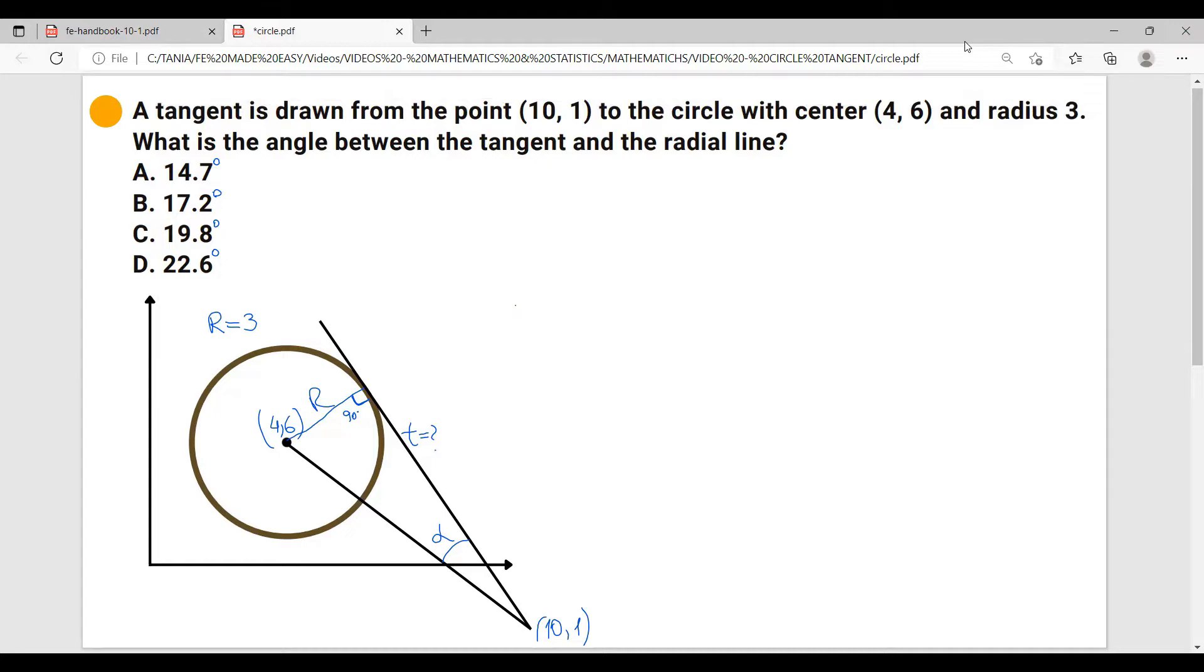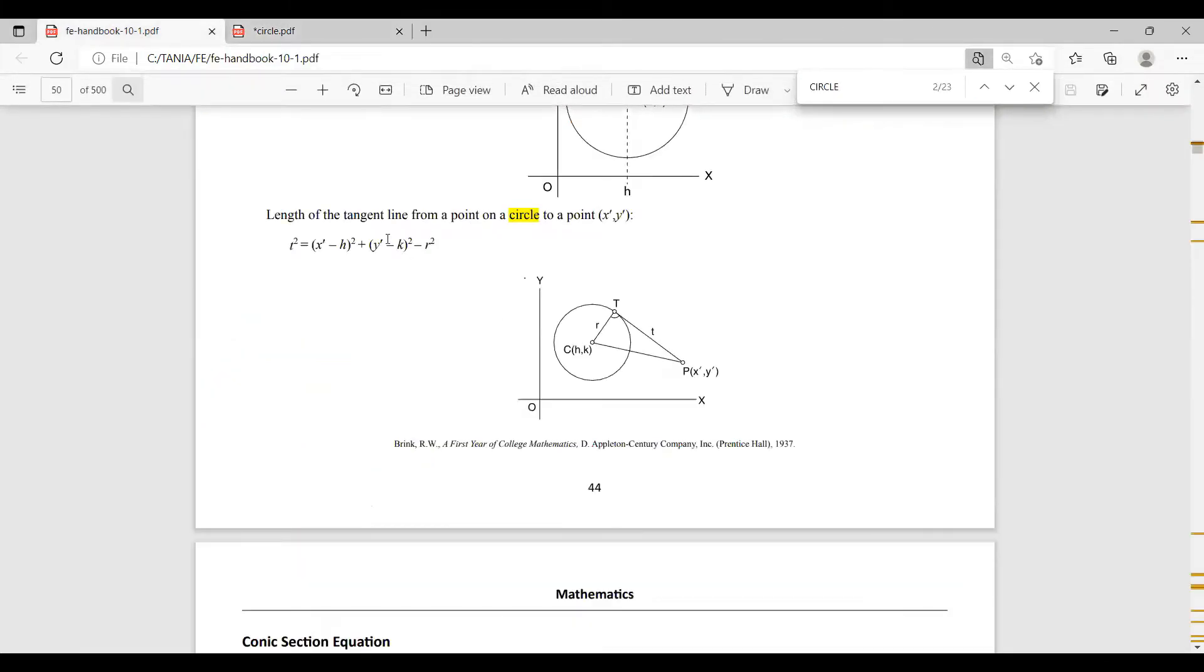Let's start from here. If I want to calculate the angle alpha, that's what the problem is asking me. I will do, out of this right triangle, tangent alpha will equal to the opposite catheter to the adjacent catheter. So I will do tangent alpha equals to the opposite catheter which is the radius over the adjacent catheter which is the tangent. In my case, I know the radius is three. I have to calculate the tangent.